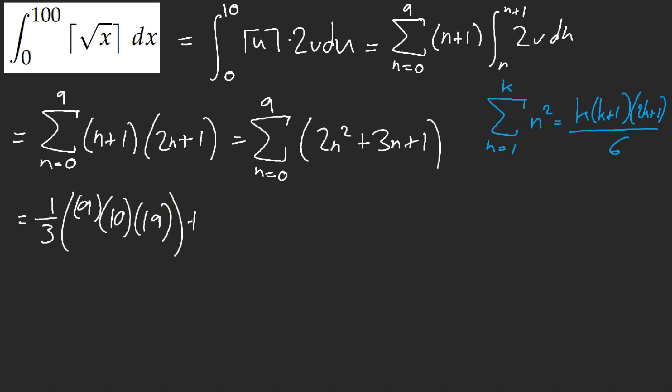And then plus, let's see, 3 halves, and then the n is 9, 10, and then this is technically 10 because we have n equal to 0.